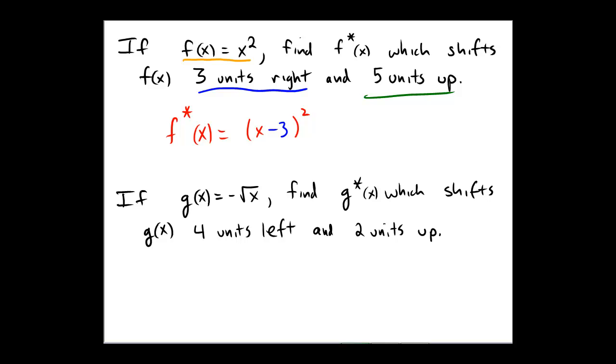And then for the vertical translation of going up 5, we will add 5 not with the x but on the outside of the original representation of the function. So minus 3 is the right shift, plus 5 is the up shift. There's our final answer for the first problem.